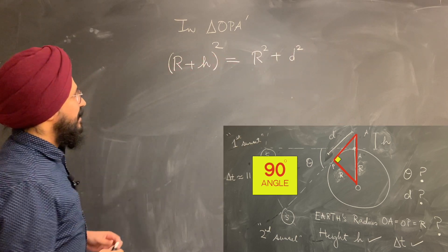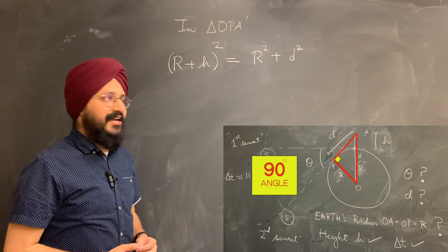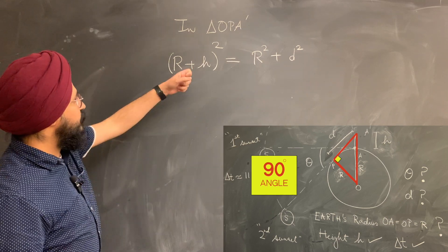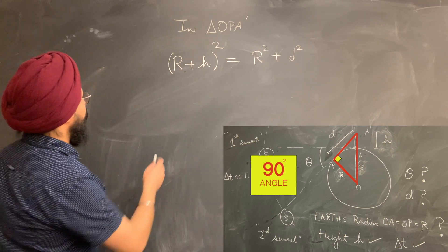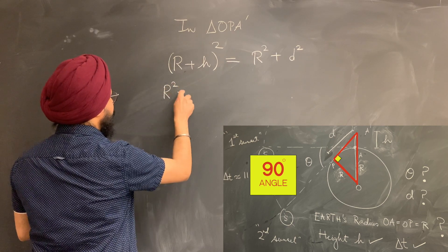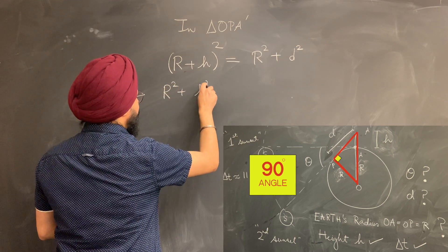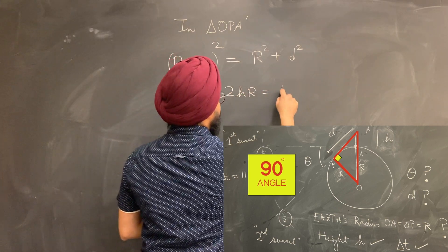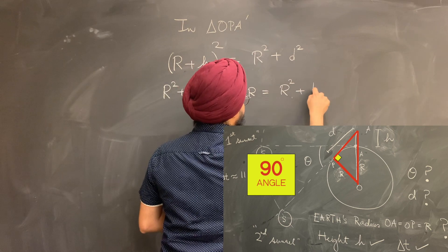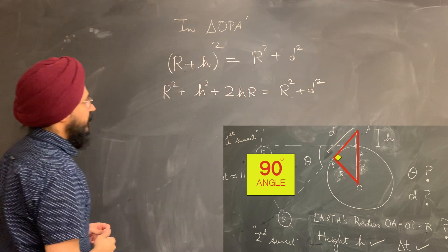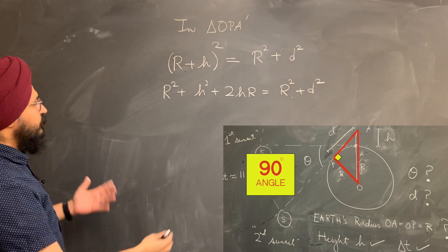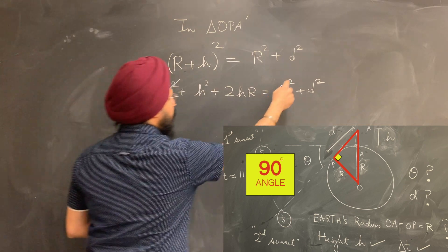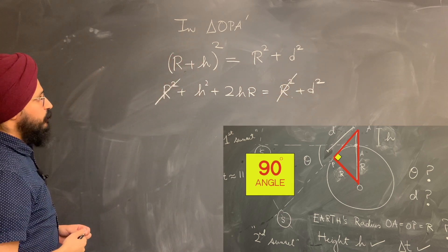Squaring that up, this must equal to the sum of squares of the other two sides, which are adjacent to the right-angle, and that gives me R-square plus D-square. Wonderful. That's the Pythagorean theorem for that right-angle triangle OPA'. Let's open up this whole square over here. So I'm going to get an R-square plus H-square plus a cross term, which is 2HR, and this whole thing equals the sum of squares of the other two sides of my right-angle triangle. As you would notice, it looks wonderful. One R-square cancels off on both sides.